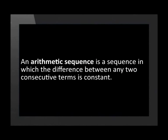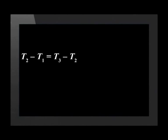An arithmetic sequence is a sequence in which the difference between any two consecutive terms is constant. If it does not have a constant first difference, then it is probably another type of pattern. We check that the first difference is the same with the formula t2 minus t1 equals t3 minus t2 to check if a sequence is linear. If t2 minus t1 does not equal t3 minus t2, then we know that the sequence is not linear.